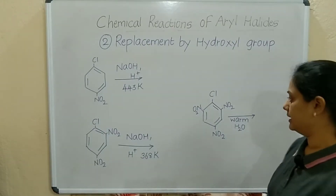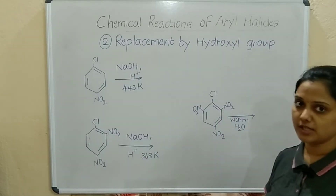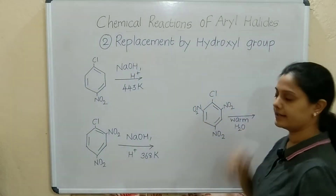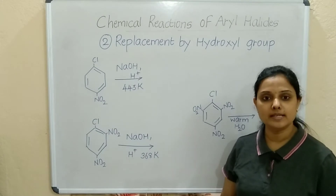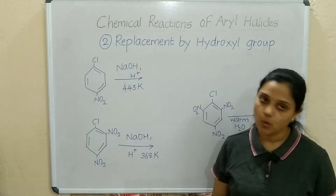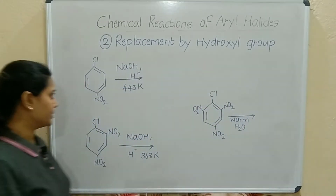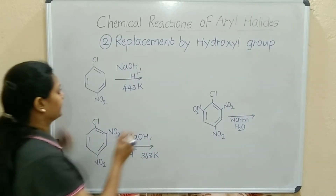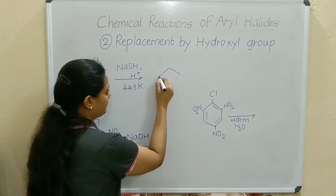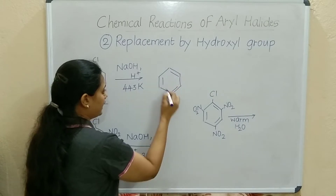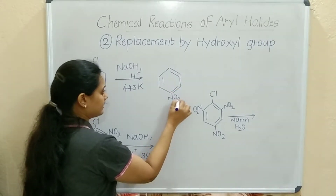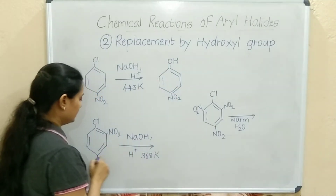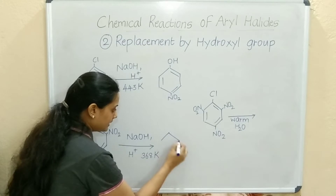I have written three compounds here with the conditions. We will check the products. As I told you, replacement by hydroxyl group — so chlorobenzene will be replaced by OH group. For the first reaction, Cl has to be replaced by OH group. NO2 will remain as it is at the para position, and OH will be attached in place of Cl.